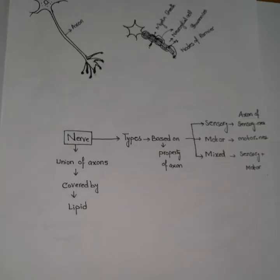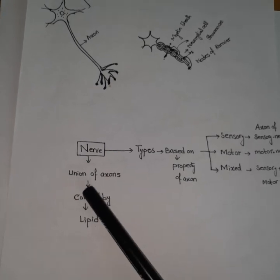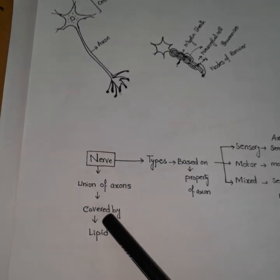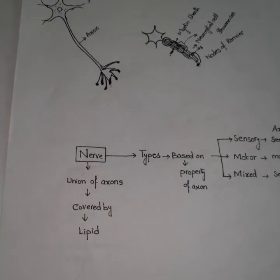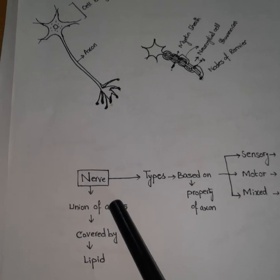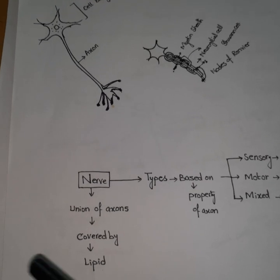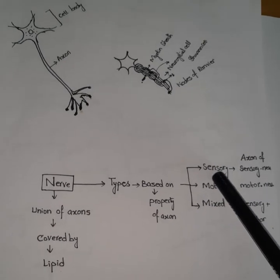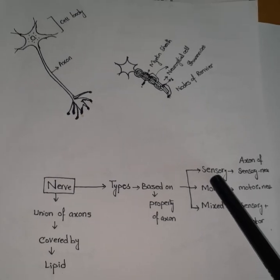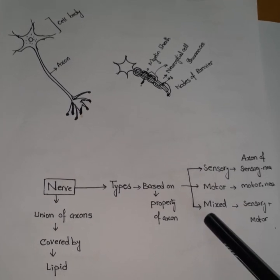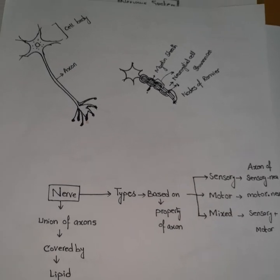Now we will discuss nerves. Nerves are basically the union of axons — when many axons are present together they form a nerve, and they are covered by a lipid layer that forms an envelope in which the axons are present. Nerves are of three types based on the property of the axons: sensory nerve, motor nerve, and mixed nerve. The sensory nerve consists of only axons of sensory neurons, the motor nerve consists of axons of motor neurons, and the mixed nerve consists of axons of both sensory and motor neurons.